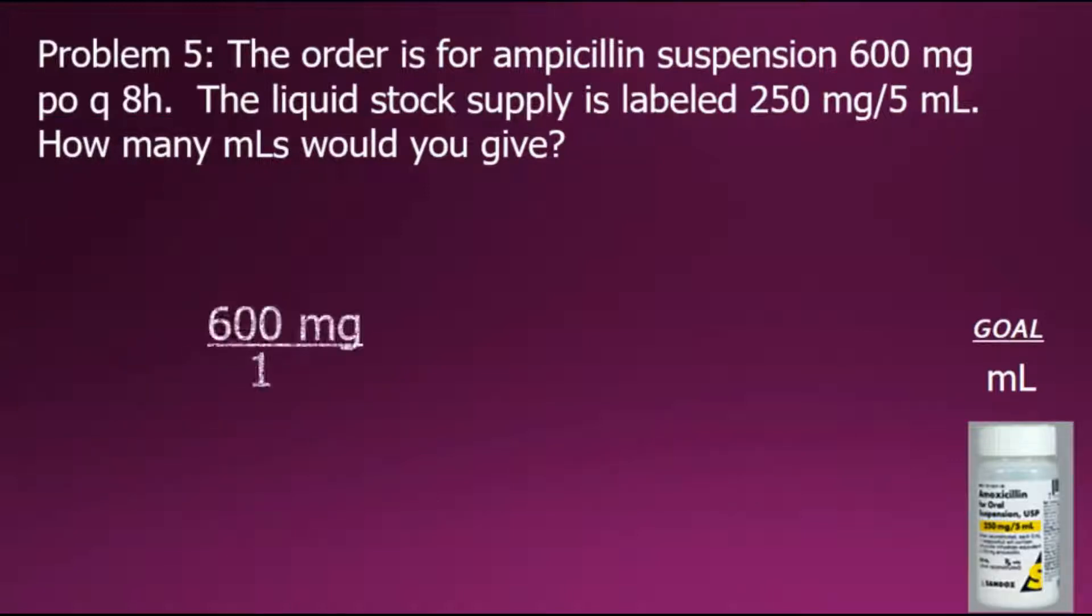We will begin the process with the doctor's order as a fraction shown here with a denominator of 1. Using dimensional analysis, we will create a conversion factor fraction so that we can eliminate the current order in milligrams. To do so, we will have to have a milligram in the denominator so that they cancel out once the multiplication is performed.